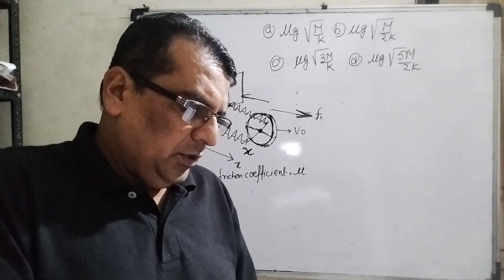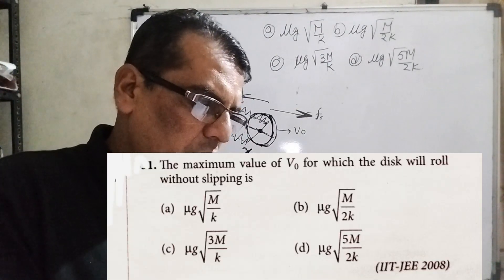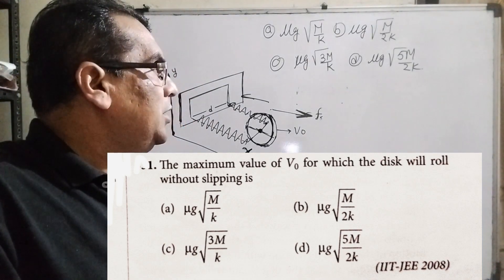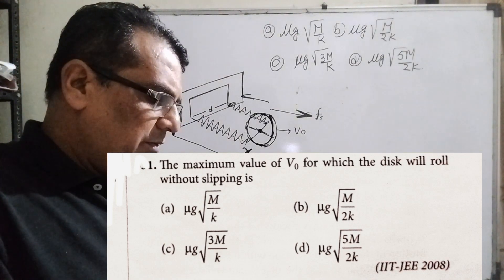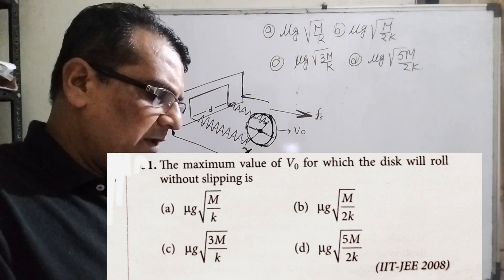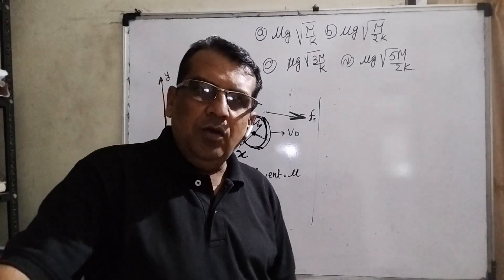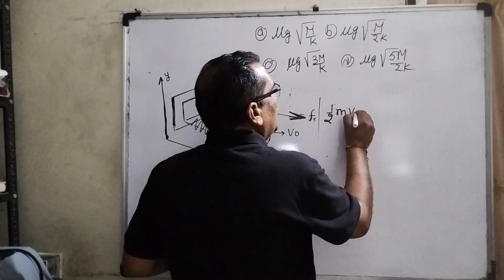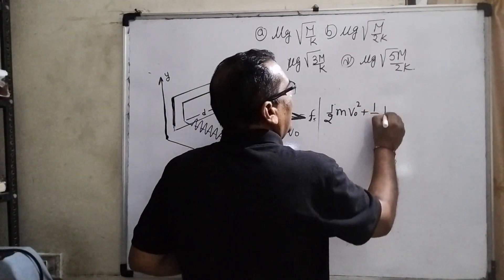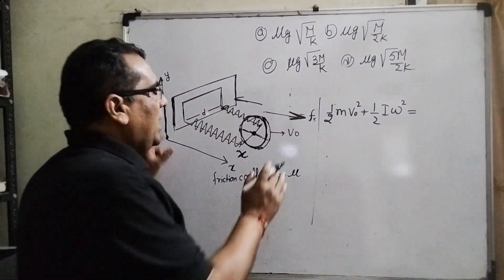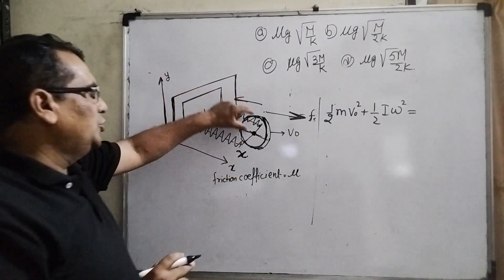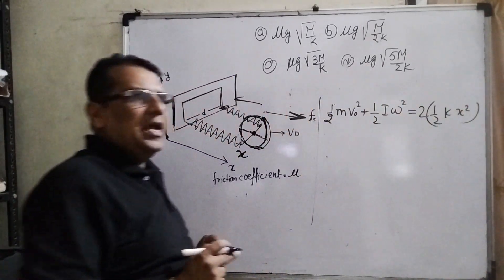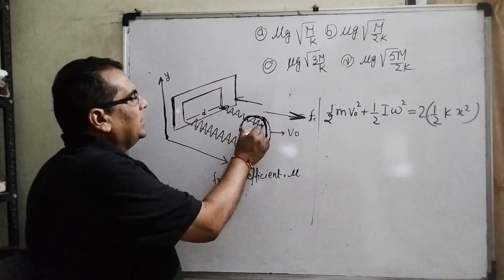The third part asks: what is the maximum value of v₀ for which the disk will roll without slipping? Options are: (A) μg·root(m/k), (B) μg·root(m/2k), (C) μg·root(3m/k), (D) μg·root(5m/2k). For the condition of pure rolling, the total kinetic energy — translational (½mv₀²) plus rotational (½Iω²) — equals the potential energy stored in the springs.